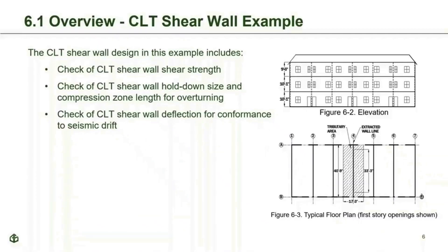The written example is about 25 pages and is laid out to show how to apply specific provisions of ASCE 7-22 and SPIDWIS 21 for CLT shear wall design. The example focuses on a single extracted CLT wall line along Line 4 as shown in a typical floor plan. The design example includes calculation of CLT shear wall in-plane shear strength, hold-down size and compression zone length for overturning, and CLT shear wall deflection.